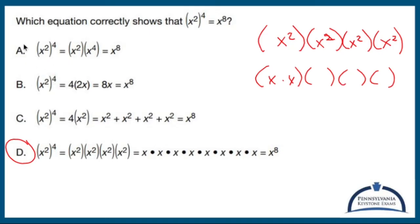That would mean that A, B, and C are showing something wrong. This is wrong — this is actually x to the sixth. This is wrong because four times two x and eight x is not the same as x to the eighth. And this is wrong because again, you're bringing down a four — four times x to the second power is four x to the second power, which is not that.